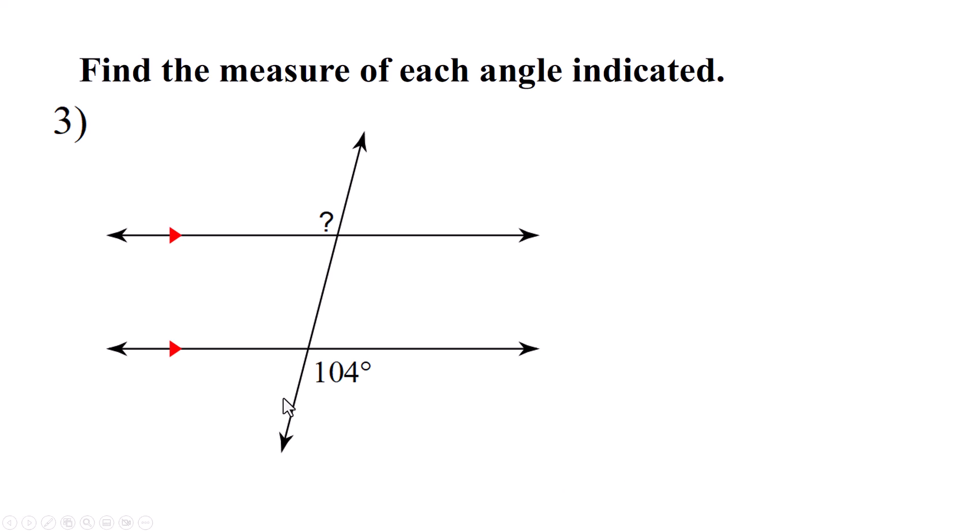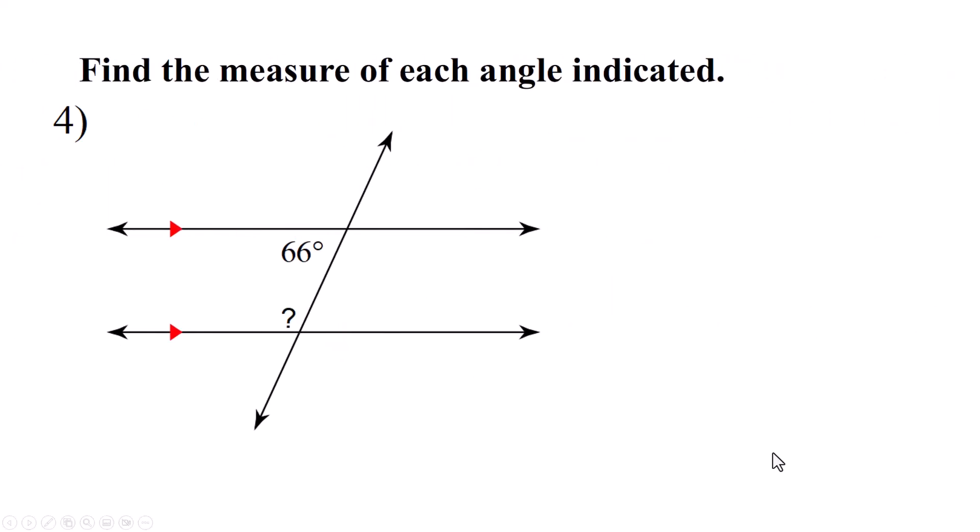All right, number three. This one, 104, is down here, and I want to know how big this angle is up here. First of all, tell me what kind of angles those are. They're alternate exterior, and we know they're equal, so this is also 104 degrees.